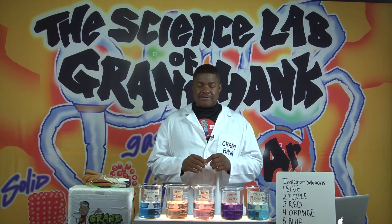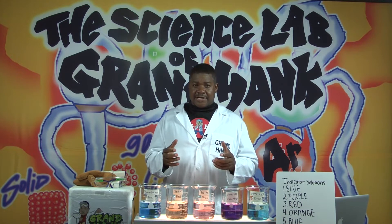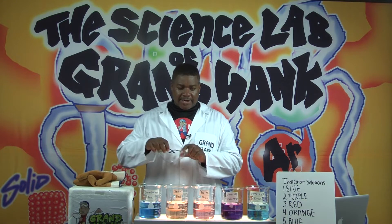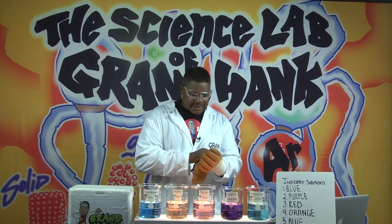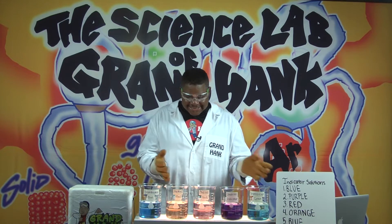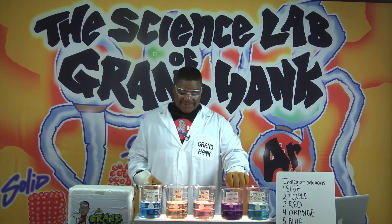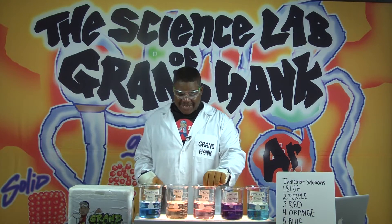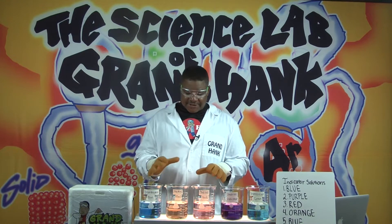Before we get in, I have one thing to put out to you — I call it the science factor question. The question is: what percentage of the atmosphere is made up of carbon dioxide gas? Now that we know what an indicator is and what sublimation is, let's dig into our experiment. We have five indicators here: bromocresol green (blue), universal indicator (purple), phenol red (reddish rose), methyl red (orange), and bromothymol blue (bluish color).